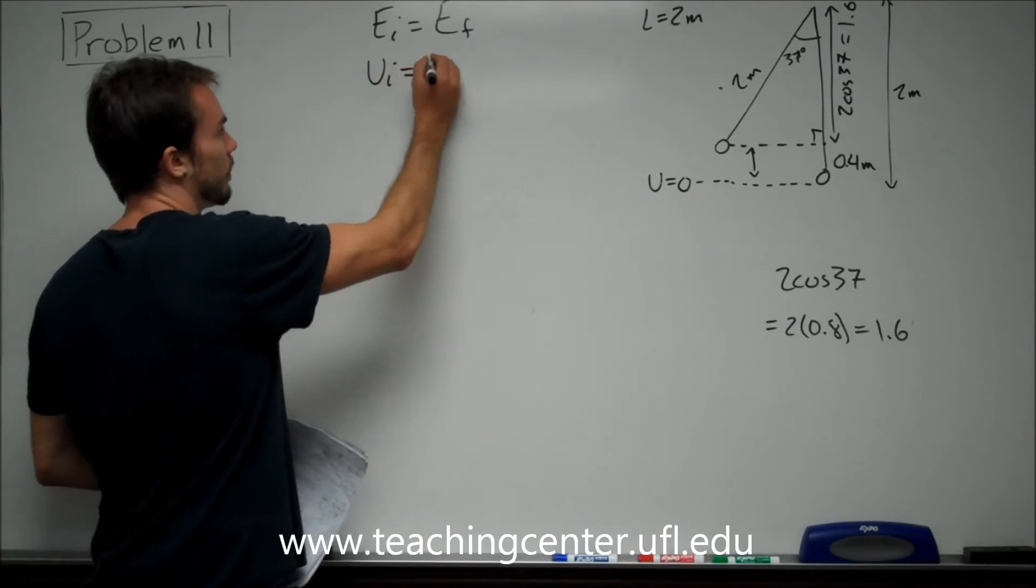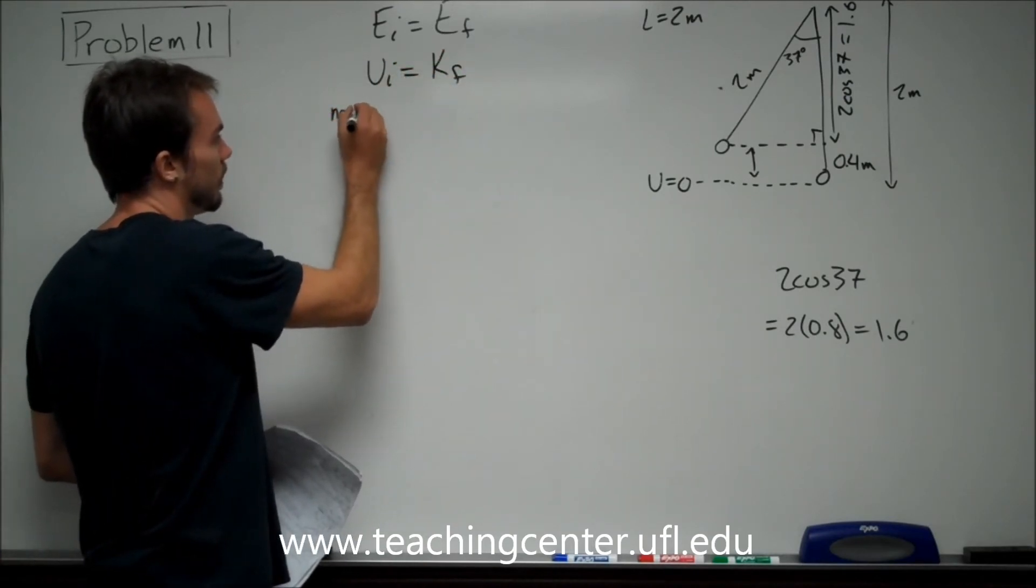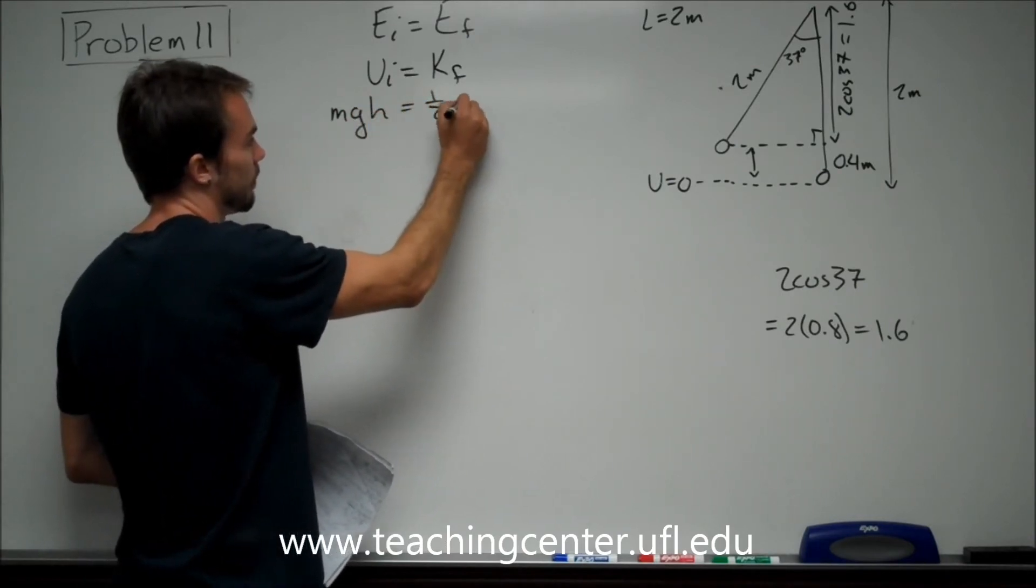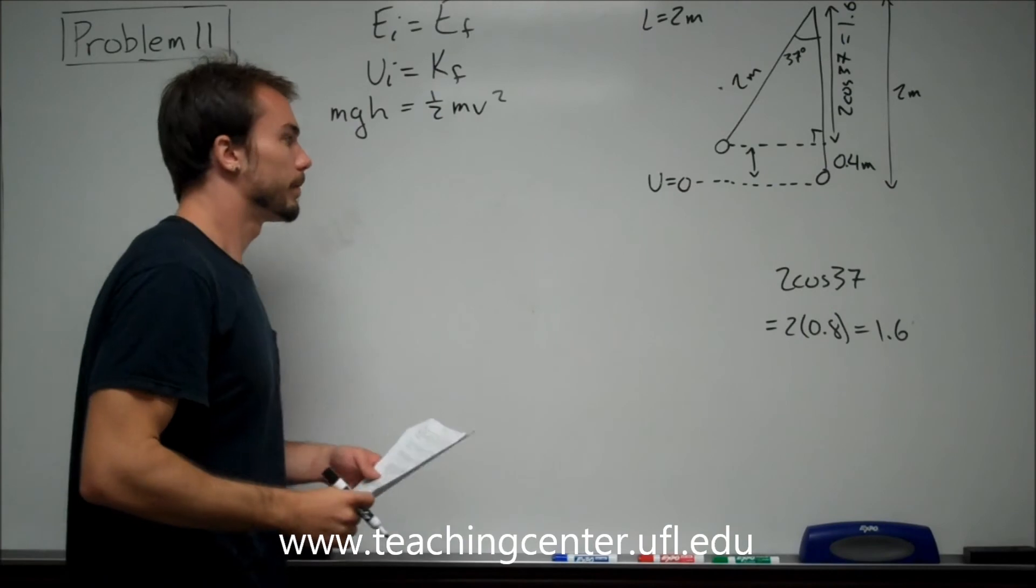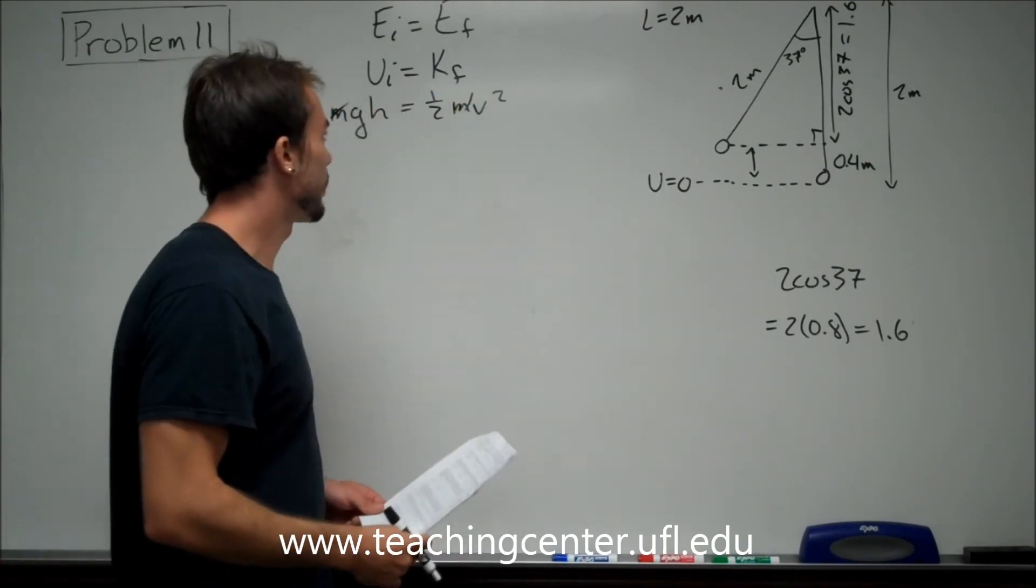So our initial potential is equal to our final kinetic. Therefore, MGH is 1/2 MV squared. Most of the time with energy problems, masses cancel out. That's why you don't get a lot of masses given to you in these problems.